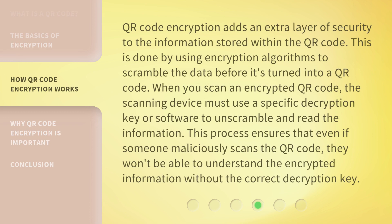QR code encryption adds an extra layer of security to the information stored within the QR code. This is done by using encryption algorithms to scramble the data before it's turned into a QR code. When you scan an encrypted QR code, the scanning device must use a specific decryption key or software to unscramble and read the information. This process ensures that even if someone maliciously scans the QR code, they won't be able to understand the encrypted information without the correct decryption key.